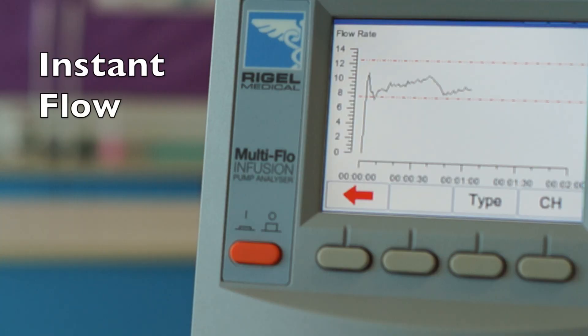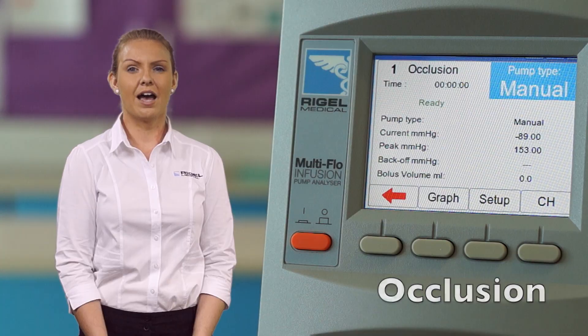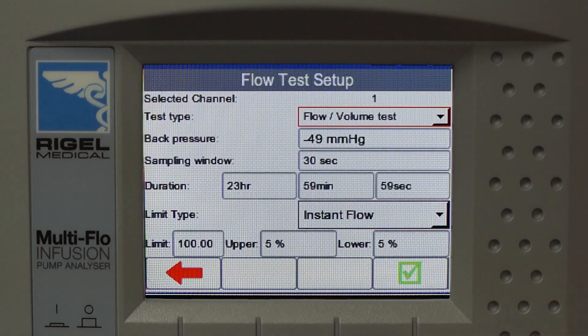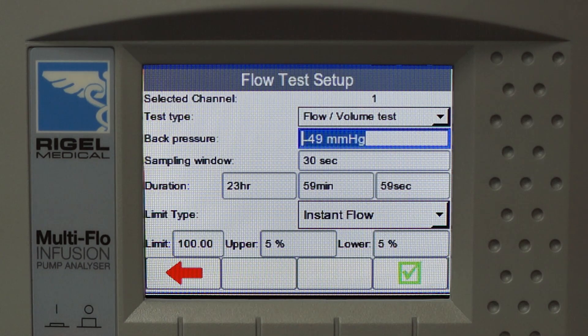It provides accurate instant flow measurements from 10 microliters per hour up to 1500 milliliters per hour, occlusion pressure measurements and PCA bolus measurements.